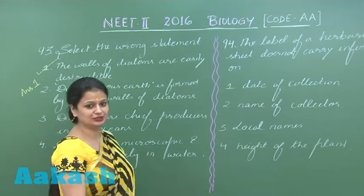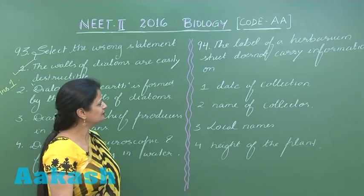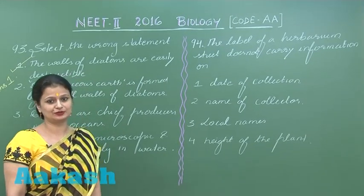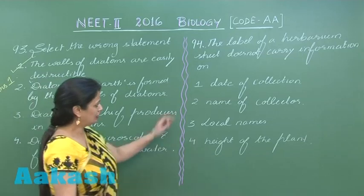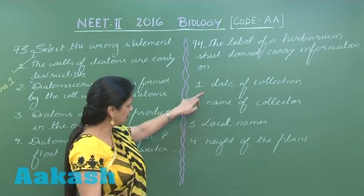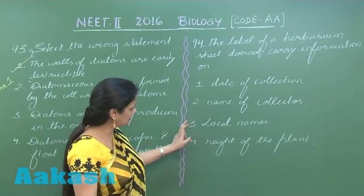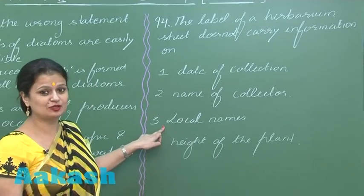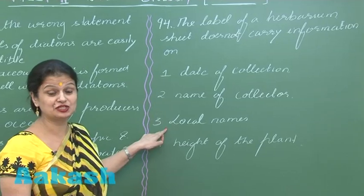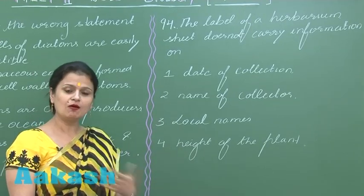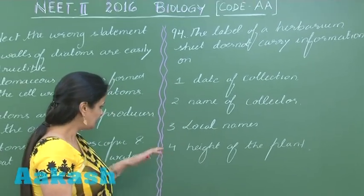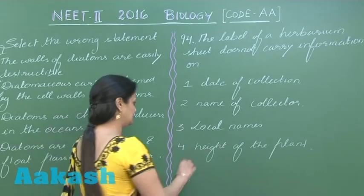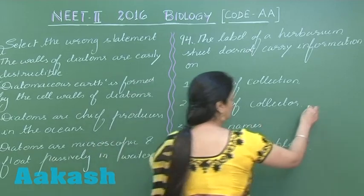Now question 94 — a very easy question. Which of the following information is not present on the herbarium sheet? Date of collection is there, name of collector is there, local names, scientific names are there, place of collection, time of collection — all these are present. However, the height of the plant is not mentioned on the herbarium sheet, so that is the wrong answer.